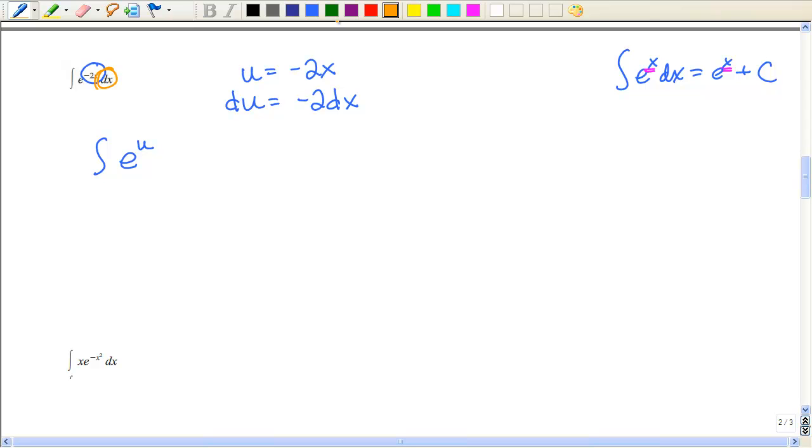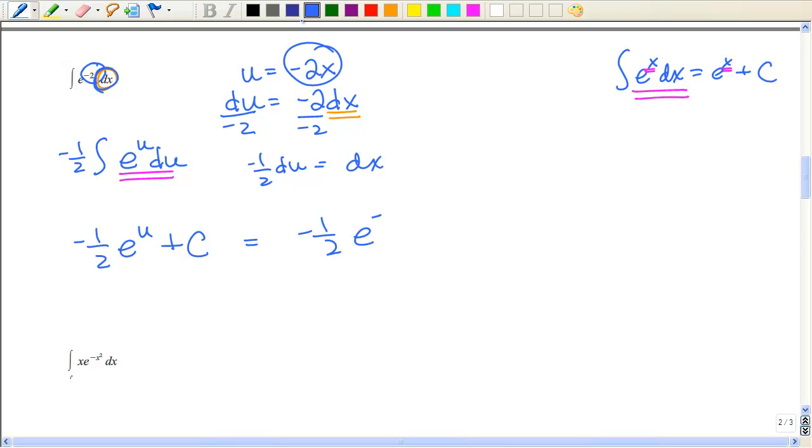So just like in the last example, I'm going to divide by negative 2. So dx is negative 1 half du. So I'm going to replace this dx with the du, but I'm going to leave that constant on the outside. Now that rule matches this rule. So I have negative 1 half e to the u plus c, which is going to be negative 1 half e. My u is negative 2x. So when you're dealing with the e function, 99% of the time, you're going to let u equal to that exponent.